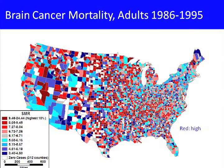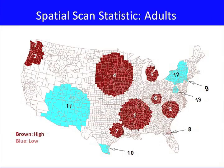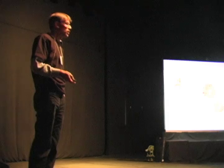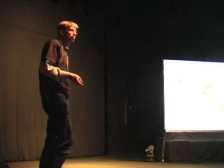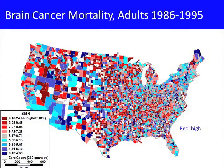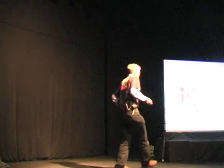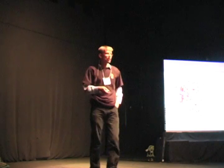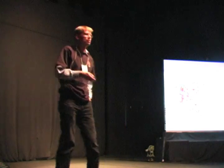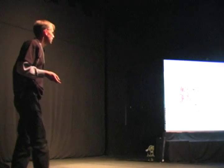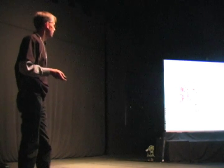We can go back and forth on this map. Why didn't Nevada show up — why is there nothing there? That's because almost nobody lives in those counties, so there may have been only one or two cases.